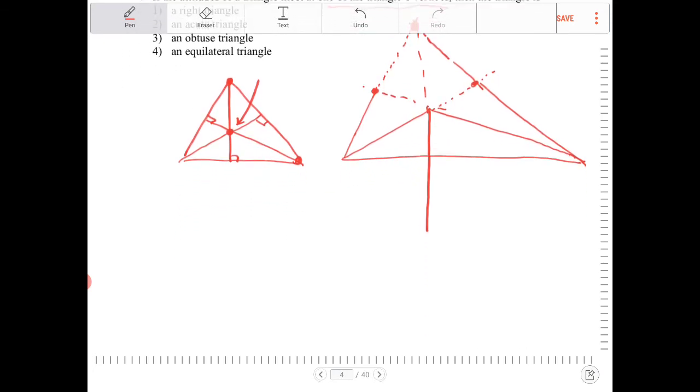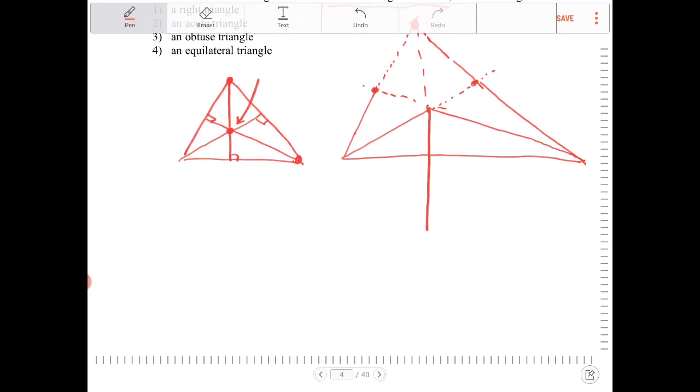Let's do an acute triangle. An acute triangle is where all the angles are less than 90. So I have an acute triangle here. So again, I draw 90, and then here I draw a 90.